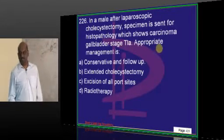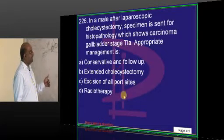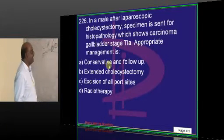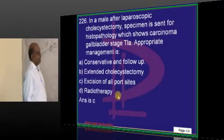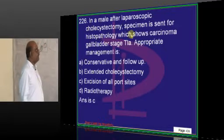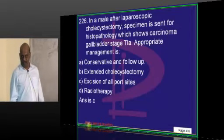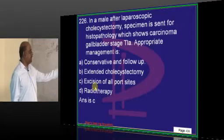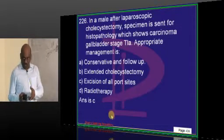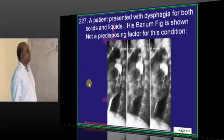In a male after laparoscopic cholecystectomy, specimen is sent to histopathology which shows carcinoma, gland, gallbladder of stage. What is the management of the patient? Whenever you happen to do a laparoscopic cholecystectomy and a specimen is showing carcinoma, you should always do excision of all the port sites. That is considered to be the clinical management.